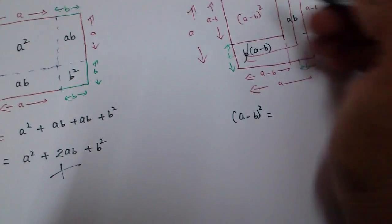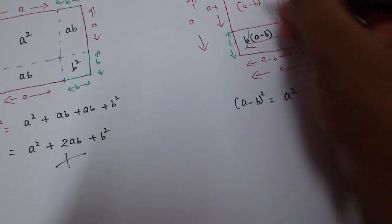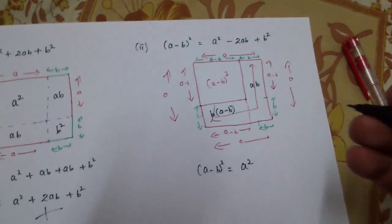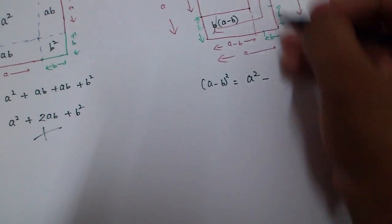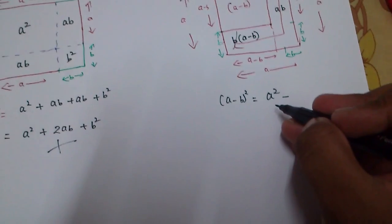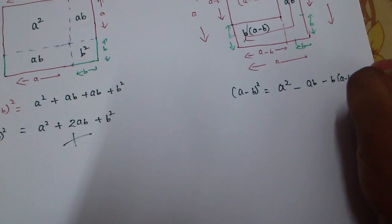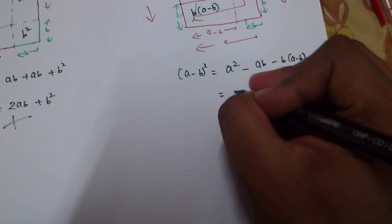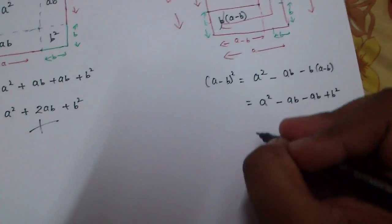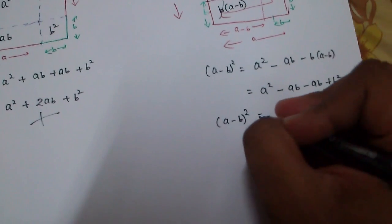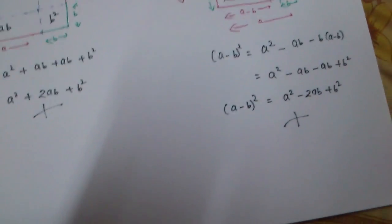To find (a − b)², I take the big square of area a² and subtract these two parts. So (a − b)² = a² − aB − B(a − b) = a² − aB − aB + b², which gives us (a − b)² = a² − 2ab + b². Hence proved. Thank you.